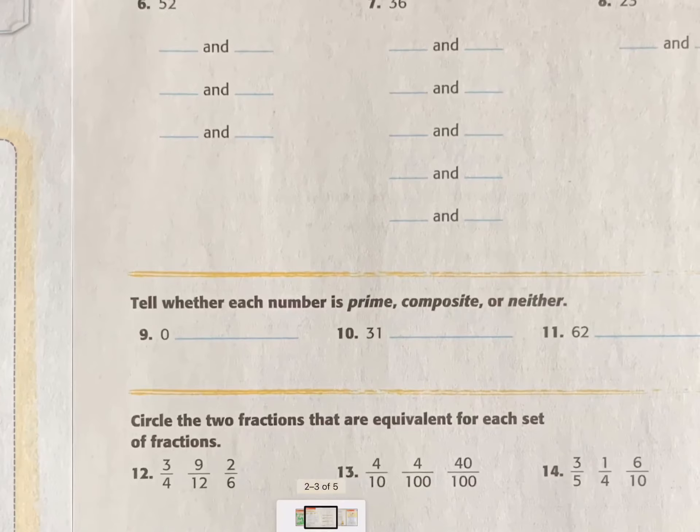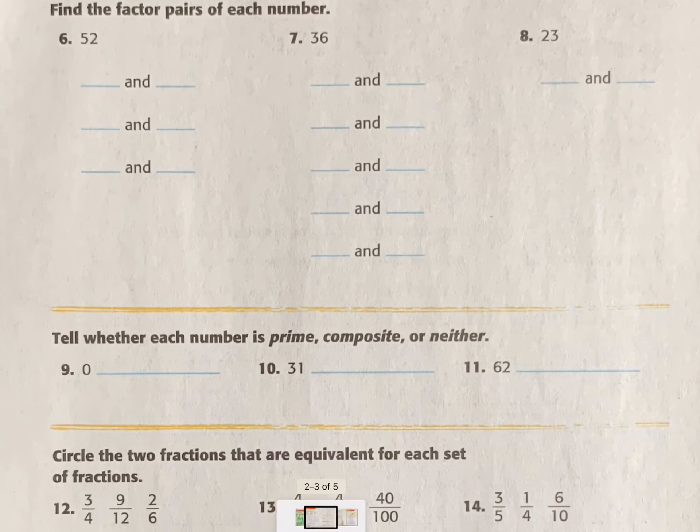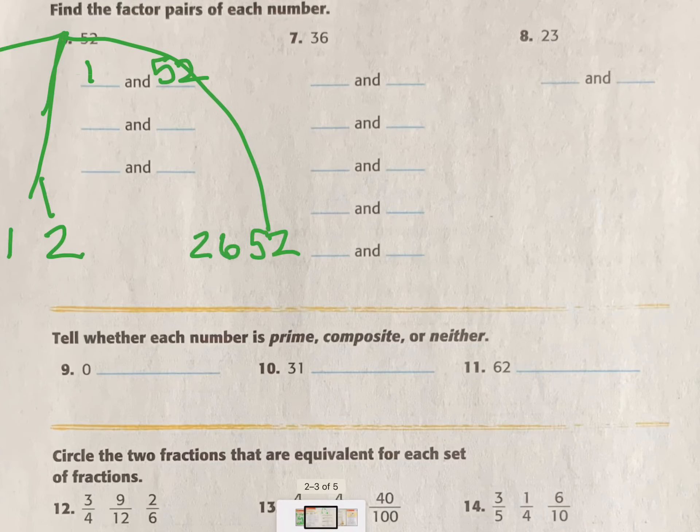All right. Now we've got our next page. Find factor pairs for each of the following numbers. Okay. So 52. I'm going to do it over here. Oh, it's not going to let me write over there. So I'm going to do it down here. Okay. So I can definitely do 1 and 52, right? It's even. So I know I can do 2 and 26. Good. 5 plus 2 is 7. So it's not divisible by 3. But it is divisible by 4. 4 and 13. So my answers here would be 1 and 52, 2 and 26, 4 and 13. And you just use division to figure that out.